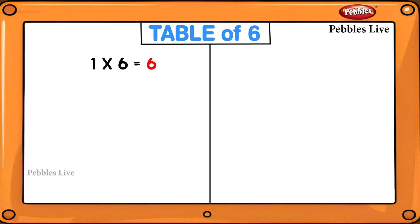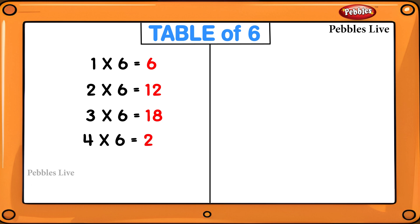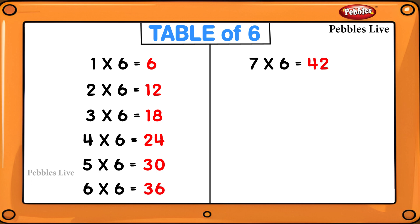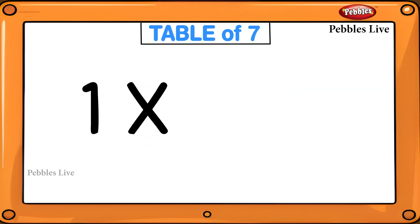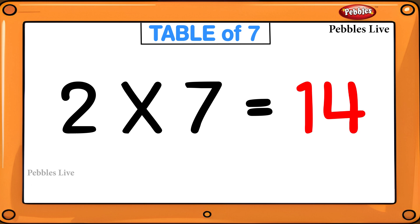1 six is 6, 2 sixes are 12, 3 sixes are 18, 4 sixes are 24, 5 sixes are 30, 6 sixes are 36, 7 sixes are 42, 8 sixes are 48, 9 sixes are 54, 10 sixes are 60, 11 sixes are 66, 12 sixes are 72. Table of 7.